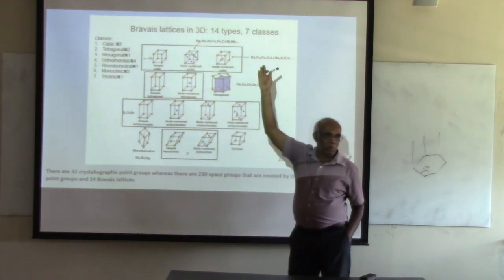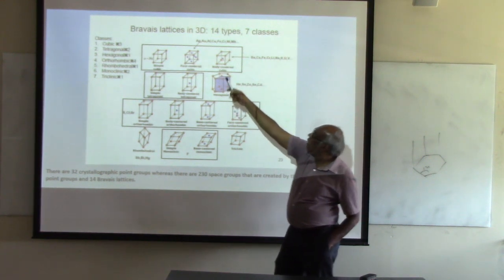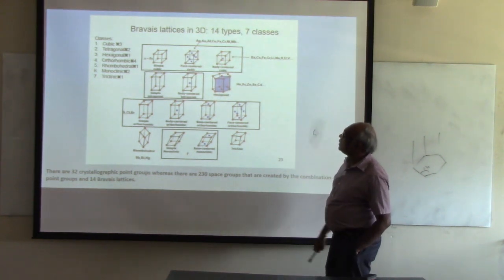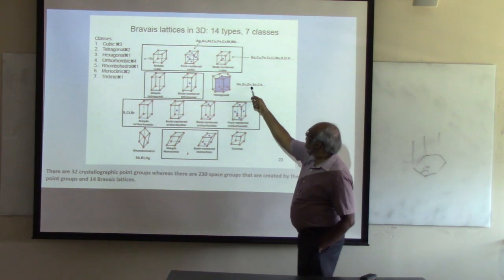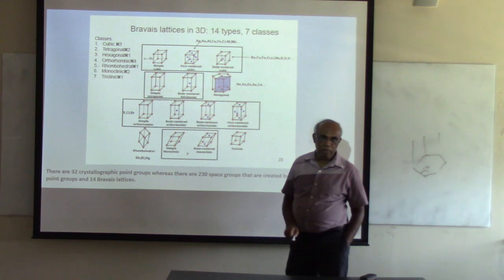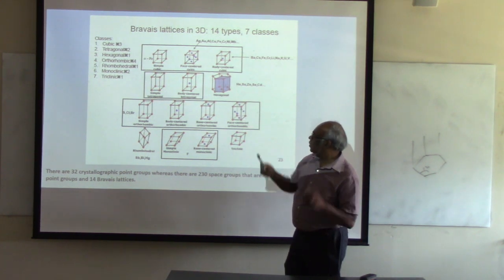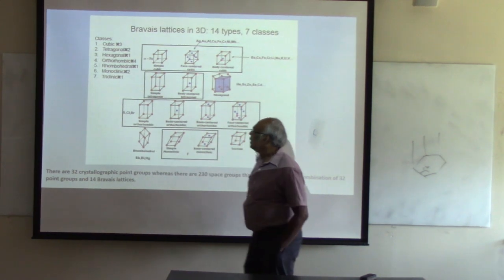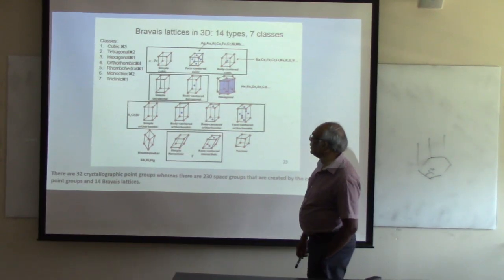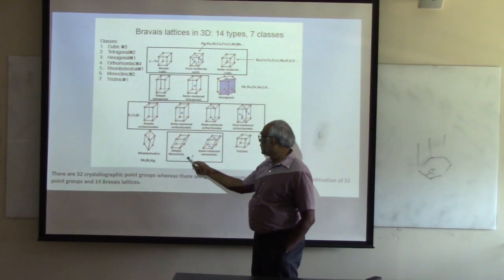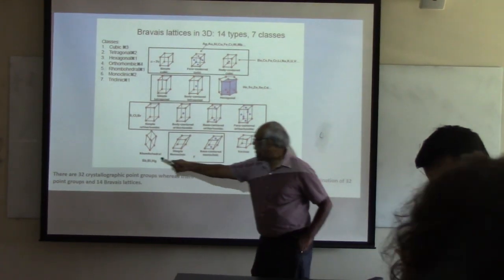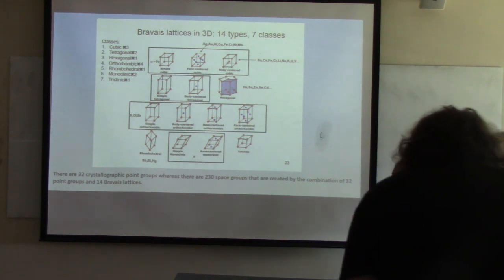Face-centered cubic is the most common — copper, silver, gold are all FCC. Body-centered cubic includes barium, chromium, even alkali metals. For hexagonal structures, calcium and selenium are examples. Orthorhombic structures include halogens and chalcogens like sulfur. Chlorine can form monoclinic structures. There are different crystal structures for different materials.